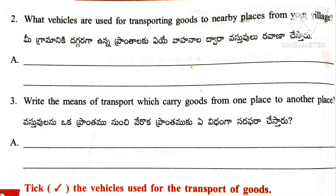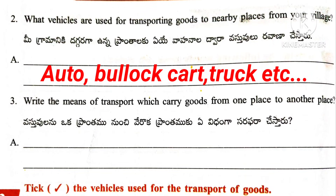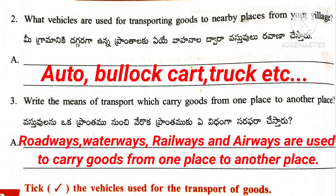Question number 2: What vehicles are used for transporting goods to nearby places from your village? Answer: Auto, bullock cart, truck, etc. Question number 3: Write the means of transport which carry goods from one place to another. Answer: Roadways, waterways, railways, and airways are used to carry goods from one place to another.